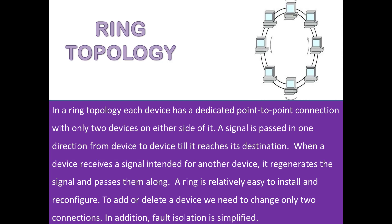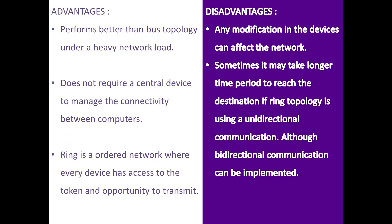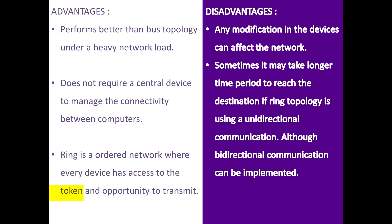A ring is relatively easy to install and reconfigure. To add or delete a device, we need to change only 2 connections. Fault isolation is also simplified here. Advantages: it performs better than bus topology under a heavy network load, it does not require a central device to manage connectivity between computers, and it is an ordered network where each device has access to the token and opportunity to transmit. Disadvantages: any modification in devices can affect the whole network, and it may take longer to reach the destination if the ring is using unidirectional communication, though this can be solved by implementing bidirectional communication.